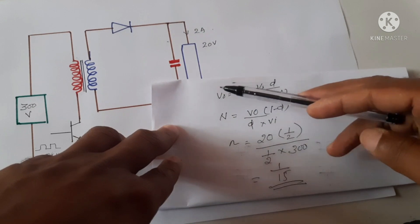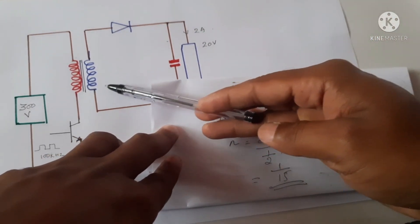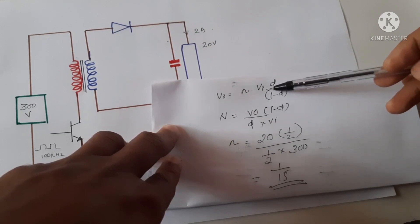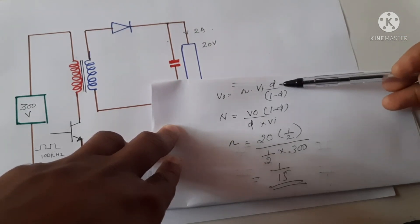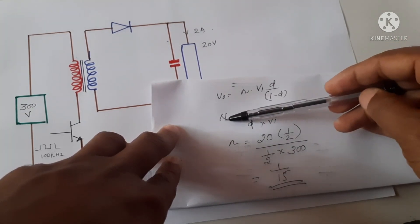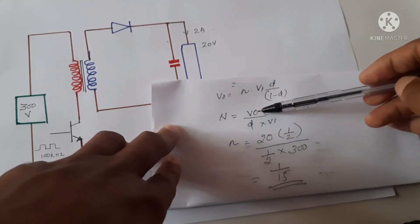The input-output voltage equation will be output voltage equals the turns ratio, number of turns ratio, into Vi into D by 1-D, where D is the on-time and 1-D is the off-time. From that we can calculate N, the turns ratio, that can be given as V0 times 1-D divided by D into Vi.